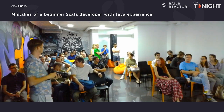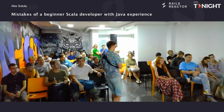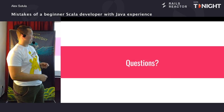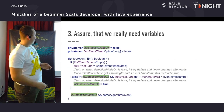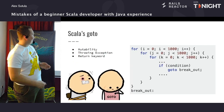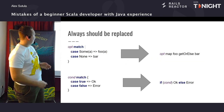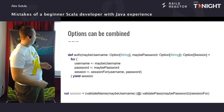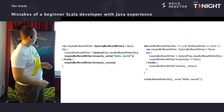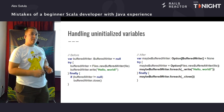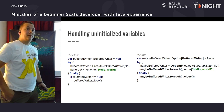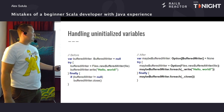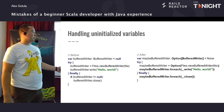Могли б ви ще показати слайд, де про null, ще раз? Де код, приклади того, як його не треба використовувати. Це buffered writer загорнутий в Option. Ось це значення — None. None — це значення. У нас Option реалізований за допомогою ієрархії. Зверху стоїть Option, і в нього є два підкласи: це None — якщо означає, що значення немає, і є ще Some.